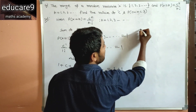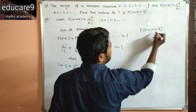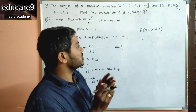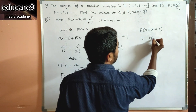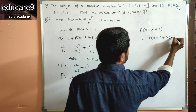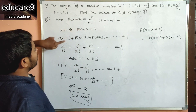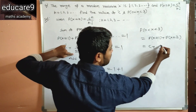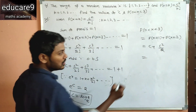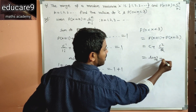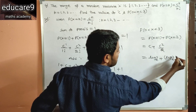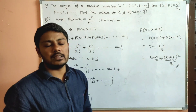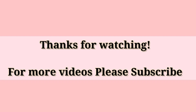Now find P(0 < X < 3). X values strictly between 0 and 3 are 1 and 2. So P(0 < X < 3) = P(X=1) + P(X=2) = c + c²/2. Substituting c = ln 2: P(0 < X < 3) = ln 2 + (ln 2)²/2.